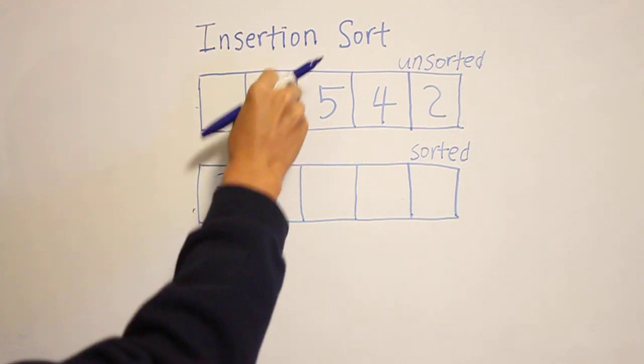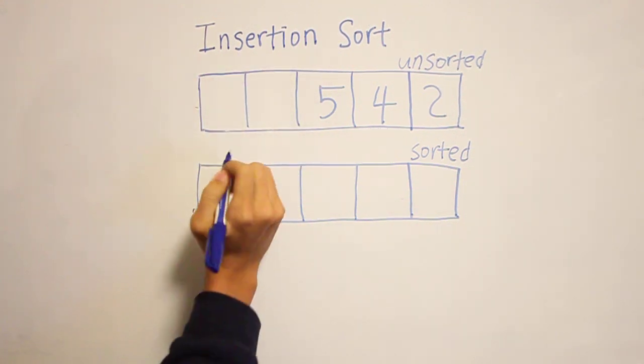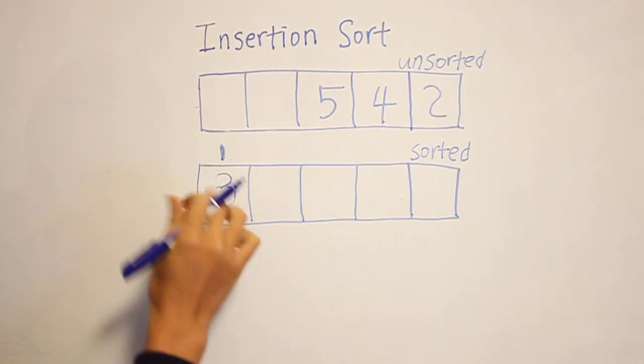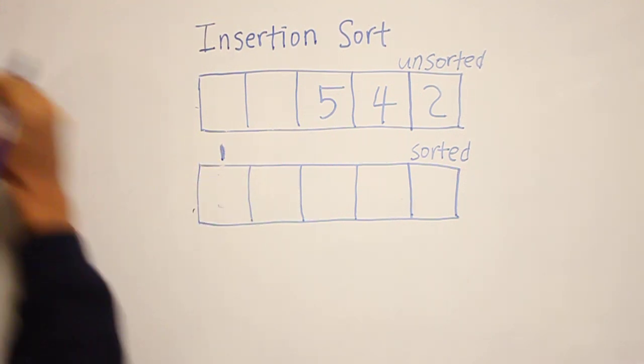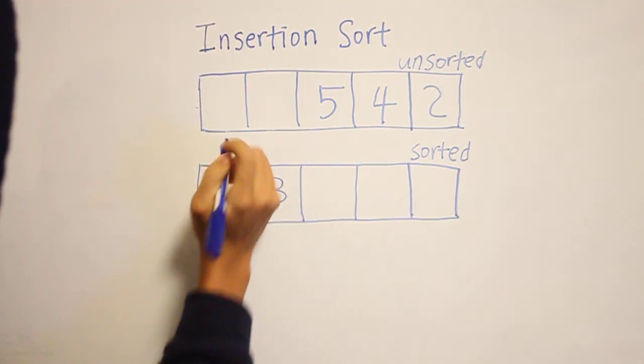And now we take one, and we try to compare it to three, and since three is bigger than one, you move it to the right side, and then put one here.